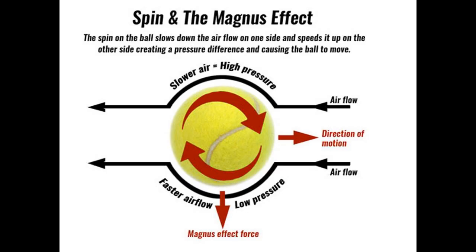Spin and the Magnus effect: the spin on a ball slows down the airflow on one side and speeds it up on the other side, creating a pressure difference and causing the ball to move. Thank you.